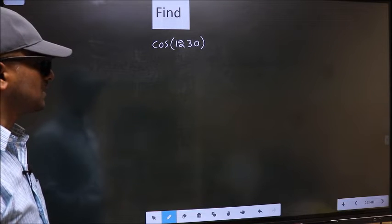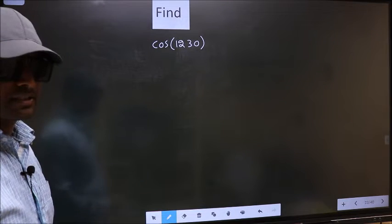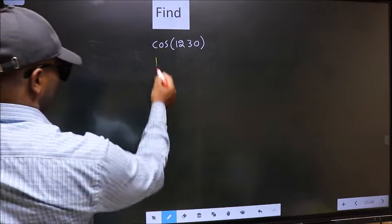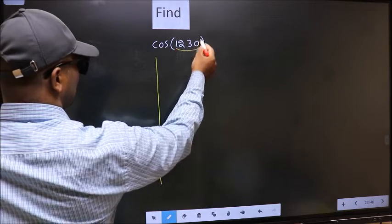Find cos(1230°). To find this, we should follow this method. Here we have 1230°.